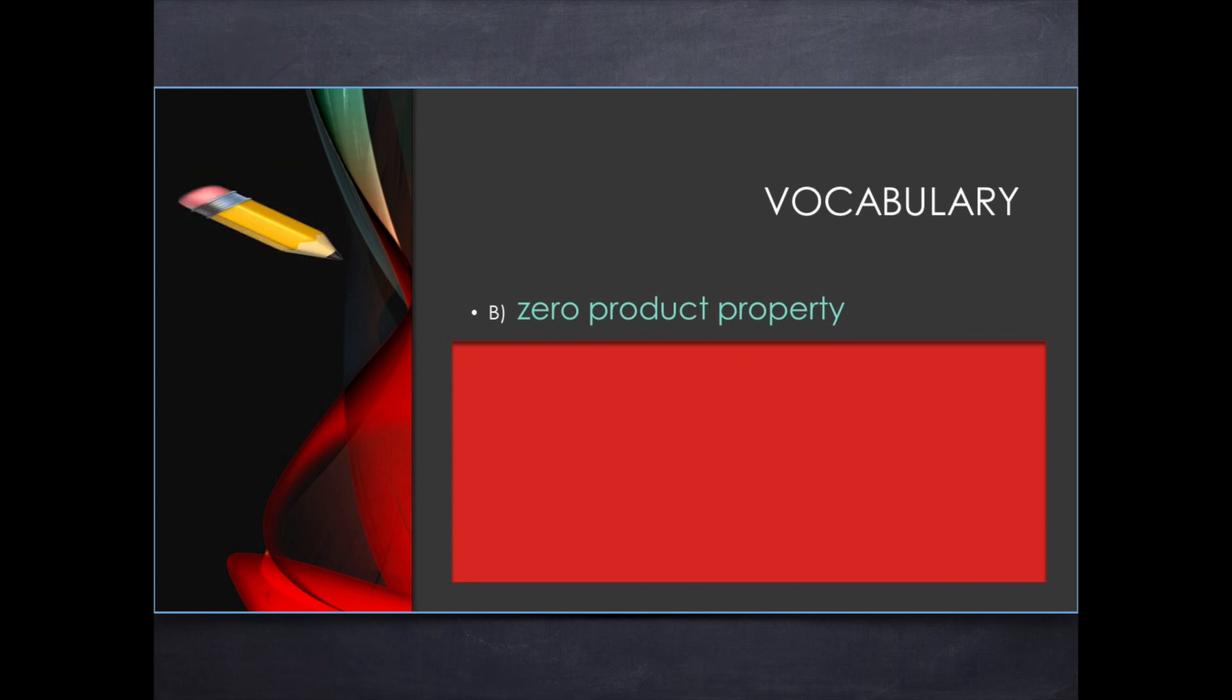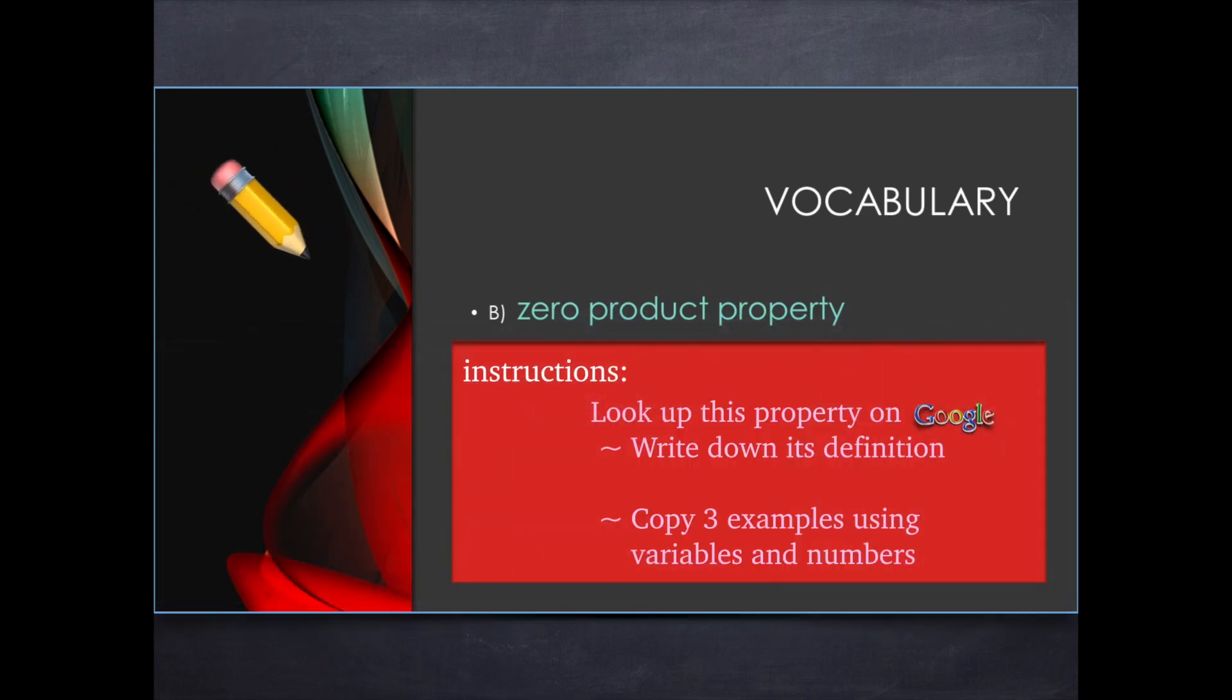Then you'll do the zero product property. Search that exact property and do the same thing. Get that in your notes along with some examples using variables and numbers.